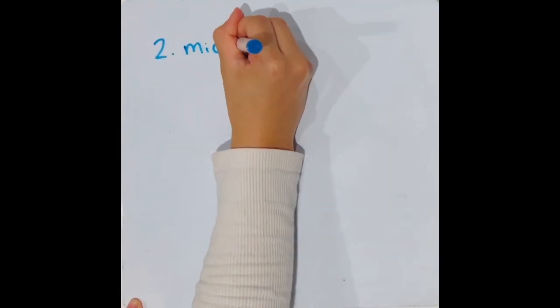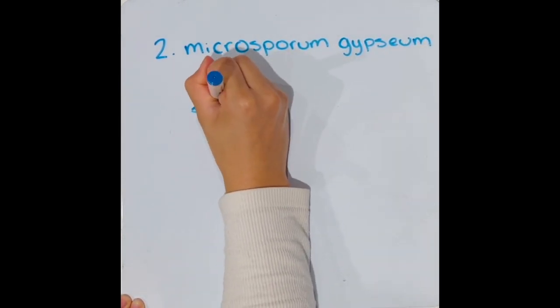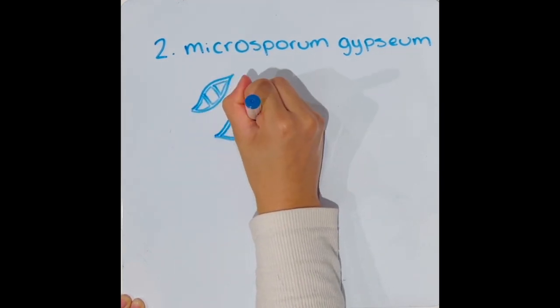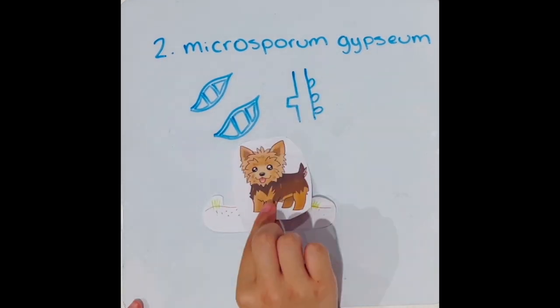Next, the Microsporum gypsium, in comparison to M. canis, has thin walls and spindle-shaped microconidia. It is geophilic, meaning that it is likely to be discovered in areas where the animal has had direct contact with contaminated soil, and is occasionally zoonotic.